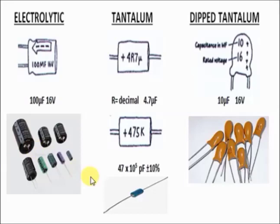There are many types of capacitors, and each type has its own way of reading specifications. First, where are capacitors used and what does a capacitor mean? Capacitors are devices which store electrical charge. They are used for power conditioning, signal coupling, decoupling, electronic noise filtering, and remote sensing — and they have many more uses.